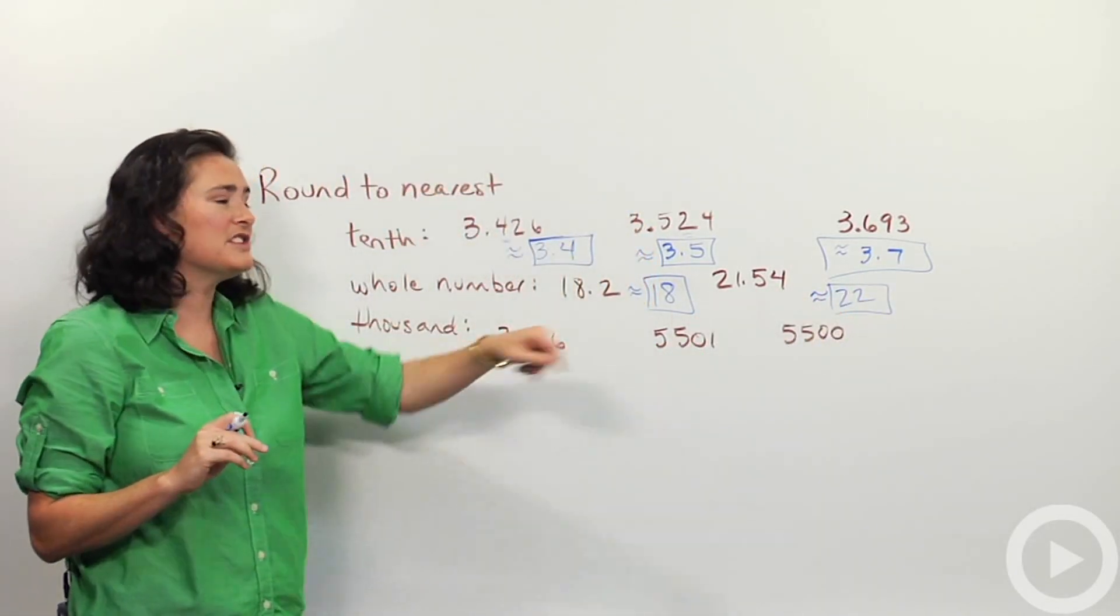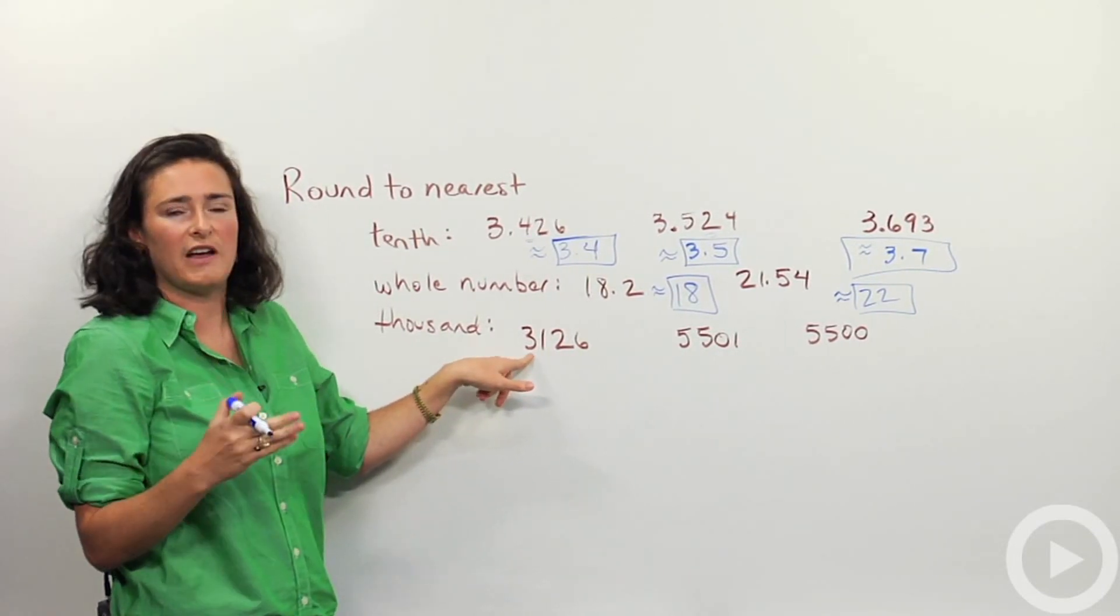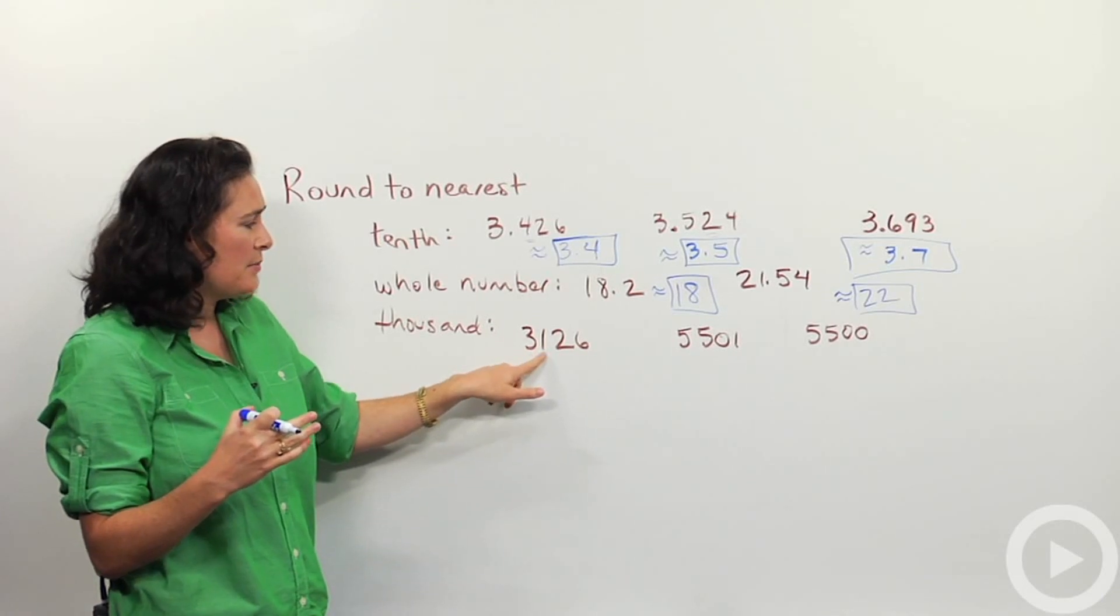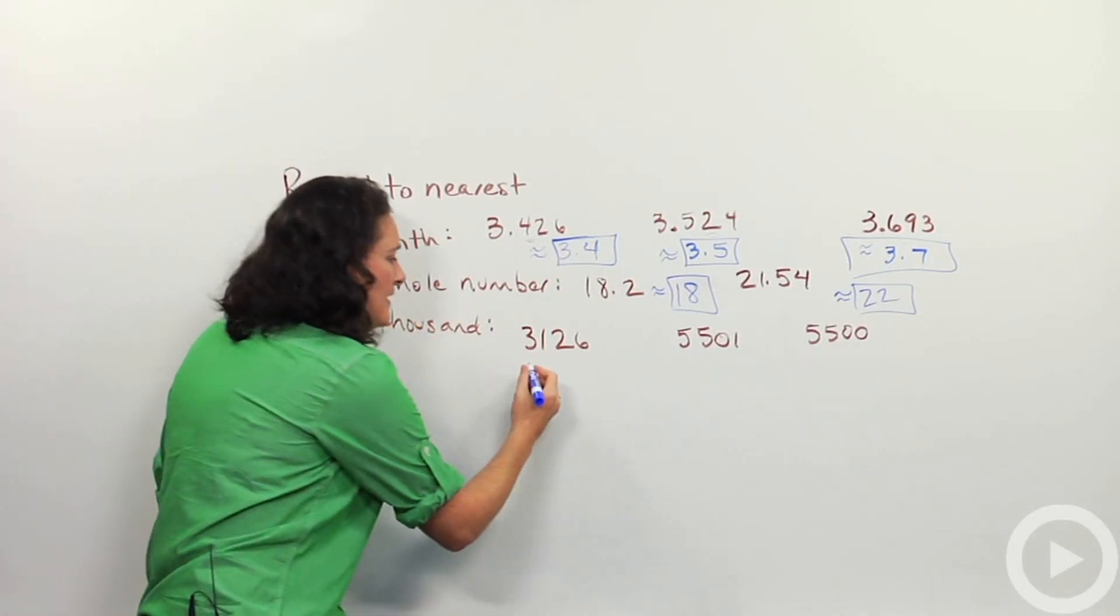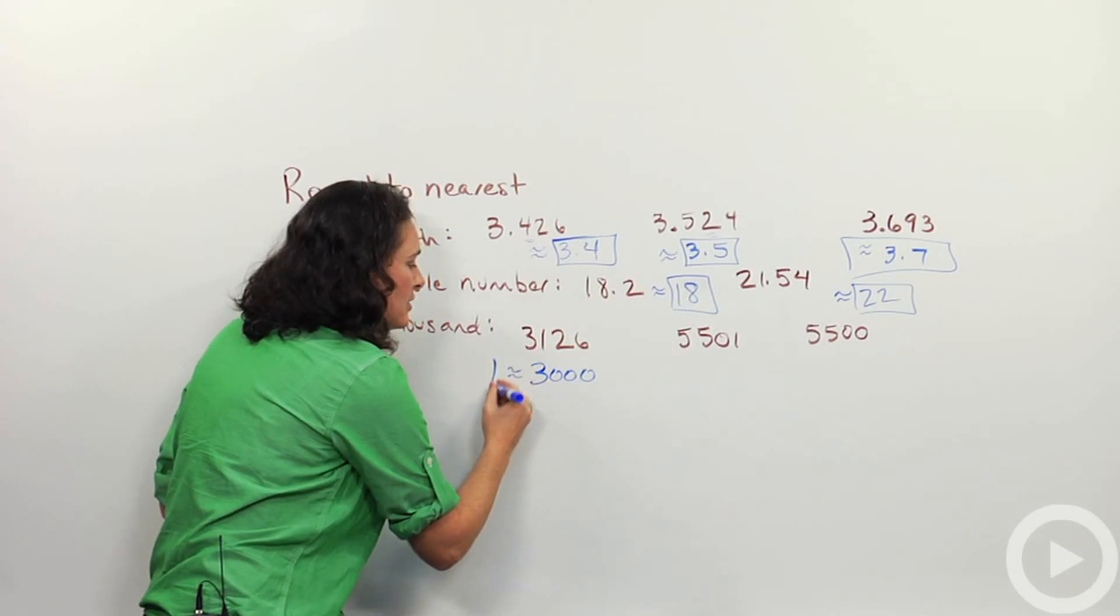We'll try a couple more. These ones now are rounding to the nearest thousand. So thousand means my answer will be like three thousand or maybe four thousand based on the number next to it. The number next to my three thousand is a one. That tells me to round down to approximately three thousand.